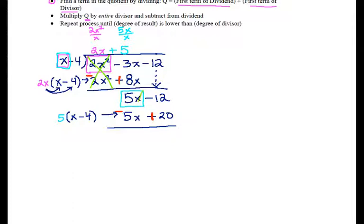Again, 5x minus 5x gives me 0. That should happen every time. And negative 12 plus 20 gives me 8. Sign errors are by far the most common mistakes in this process, by the way.